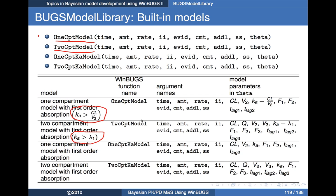That actually arose from conventions used in PK Bugs. Afterwards I decided I didn't like that particular convention for most applications. So I've also written versions called 1CPT KA model and 2CPT KA model that don't enforce constraints on KA. If I enforce constraints at all, I do it inside Bugs such that I might constrain the population mean of KA but don't generally constrain the individual values of KA. Both options are available.